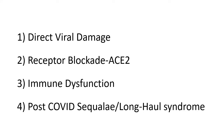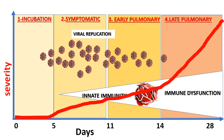In a nutshell, the pathophysiology of the virus can be explained in four things: one, damage due to the direct virus; interaction with the ACE2 receptor; the immune dysfunction; and the post-COVID sequelae, otherwise known as Long-Haul syndrome. As a reminder from the last part of the lecture, there are totally four stages in COVID-19 disease: incubation, symptomatic, early pulmonary, and late pulmonary phase. The viral replication is more in the early phase, whereas in the late phases, the immune dysfunction is going to be more predominant.